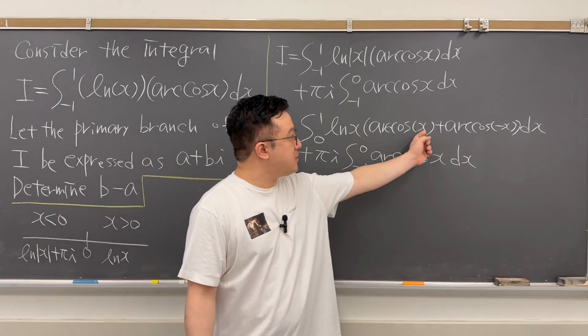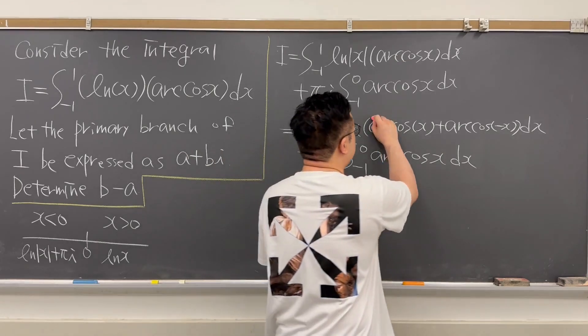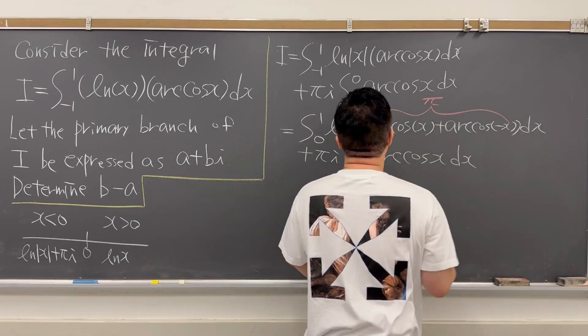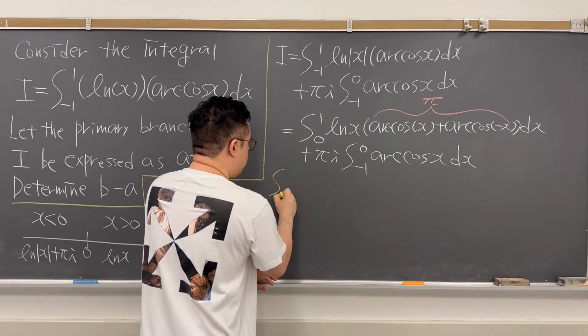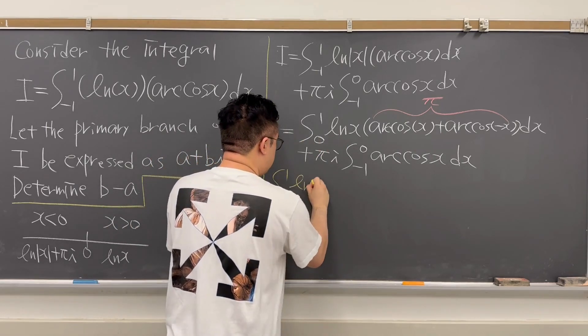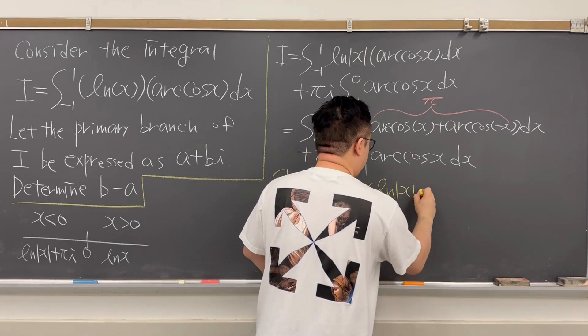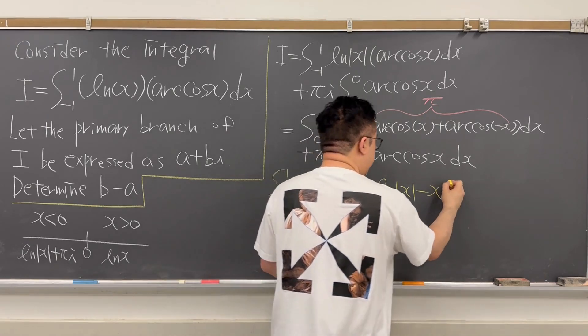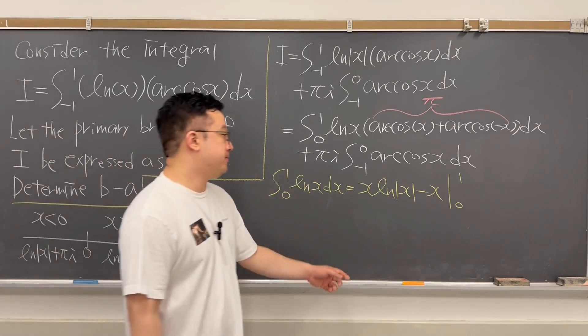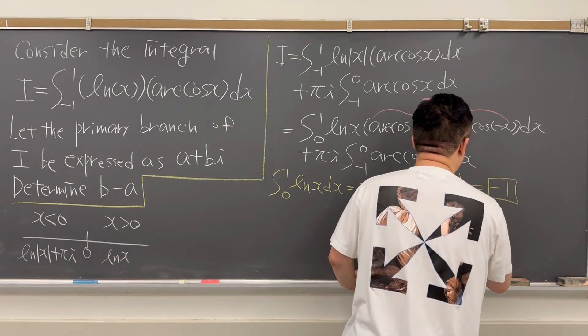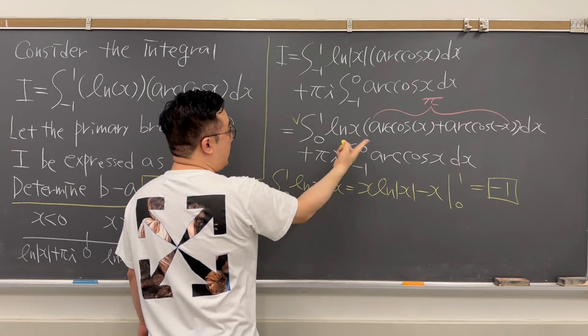Okay, then we can notice how your arccos(x) plus arccos(negative x) is just equal to π. And at the same time, integral from 0 to 1 ln(x) dx, this is just going to be equal to x times ln of absolute value of x minus x, from lower bound 0 to upper bound 1. So if you calculate this, it's just going to be negative 1. So that's why the first integral is now negative π.